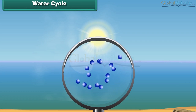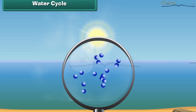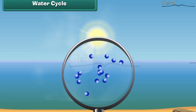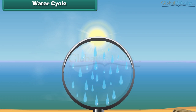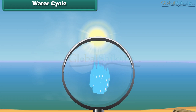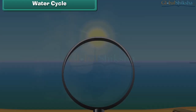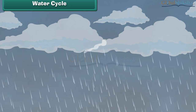As it goes higher and higher, the water vapour cools down. Cooling changes the water vapour into water droplets. The water droplets come together and form clouds. Water droplets present in the clouds then fall on earth as rain.